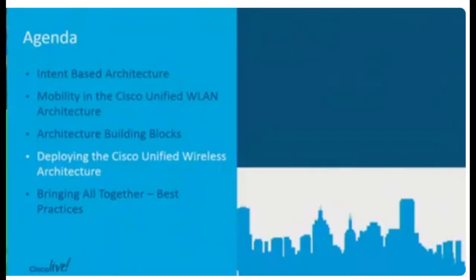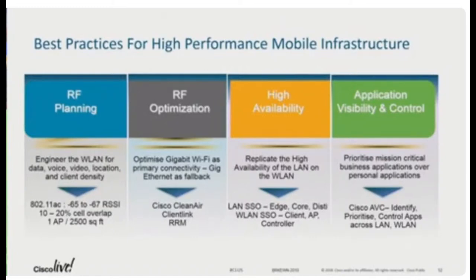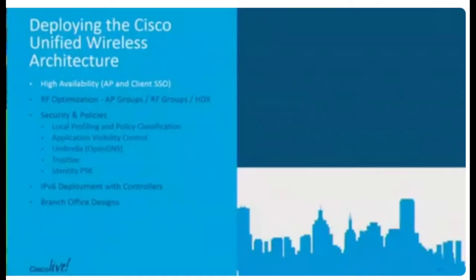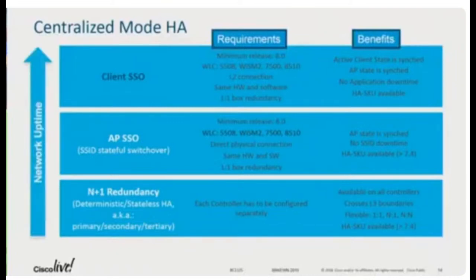Let's look at deployment options: RF planning, optimization, HA, AVC, and control are the key areas. First is HA — everybody deploying a wireless network now is starting with an HA deployment. There are two types of redundancy: N+1 redundancy, or a combination of AP SSO and client SSO for full redundancy. We have support for both in the controllers. N+1 redundancy means you have one backup controller in your data center, and if you lose one of the other controllers, all the APs fall back to the backup controller. To make this work, add the IP address and name of the backup controller and tweak some heartbeat values.